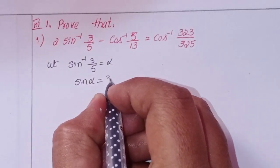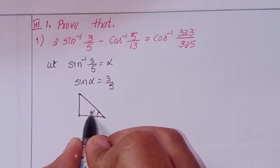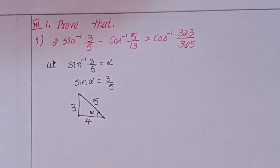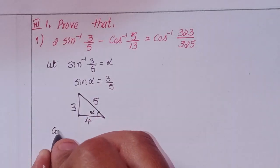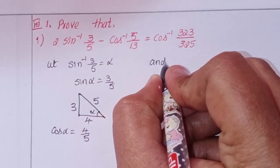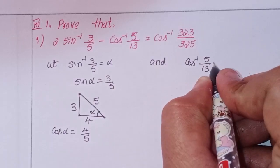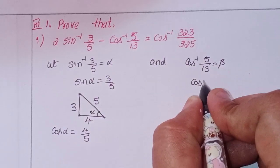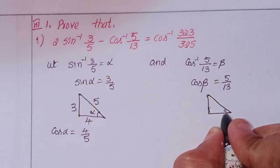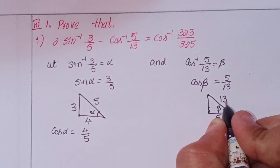So sin(alpha) = 3/5. Take a right angle triangle where angle is alpha; opposite by hypotenuse gives adjacent side as 4, so cos(alpha) = 4/5. And let cos⁻¹(5/13) equal to beta, so cos(beta) = 5/13. Take another right angle triangle where angle is beta, adjacent side by hypotenuse, so automatically the opposite side is 12.